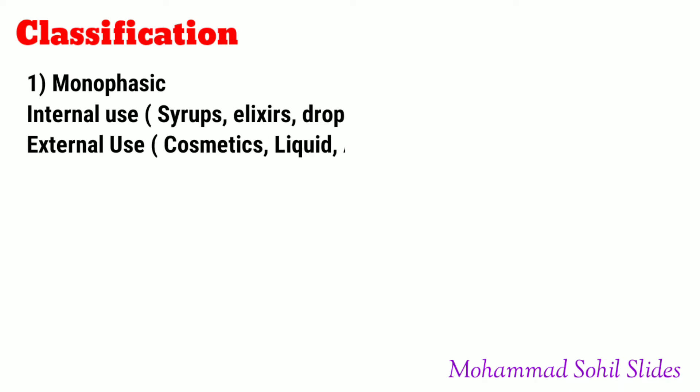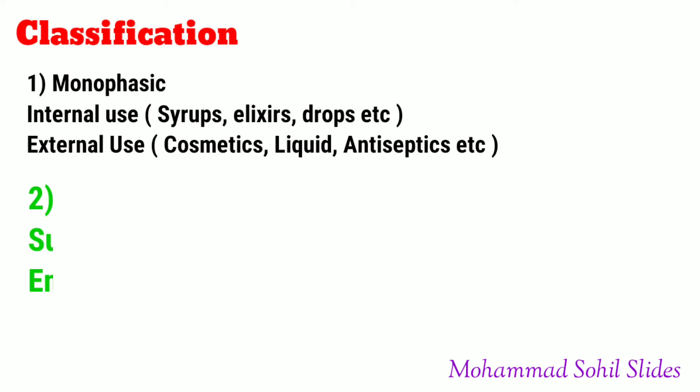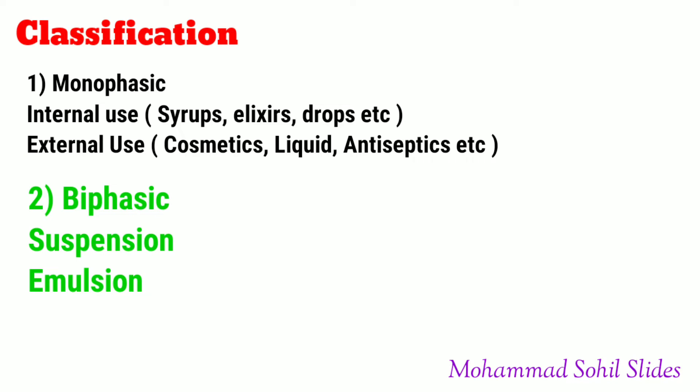Now coming to the important topic, that is classification of liquid dosage form. Depending on the phases present, liquid dosage forms are classified as monophasic liquid dosage form and biphasic liquid dosage form. Monophasic liquid dosage forms contain a single phase — they are homogeneous in nature. Biphasic liquid dosage forms contain two phases — they are heterogeneous in nature. Biphasic liquid dosage forms include dispersion of solid particles into liquid, called suspension, or dispersion of finely divided liquid droplets into liquid, called emulsion.